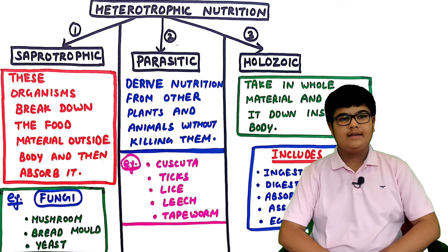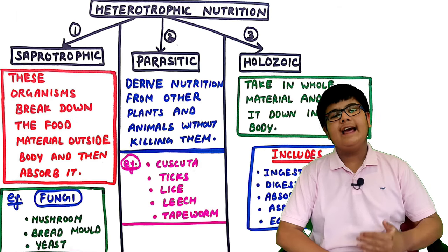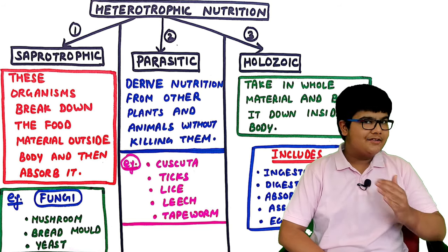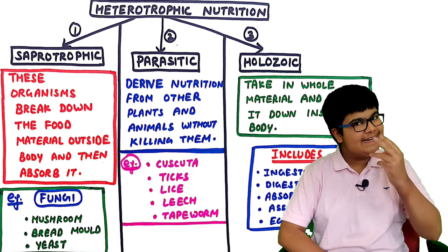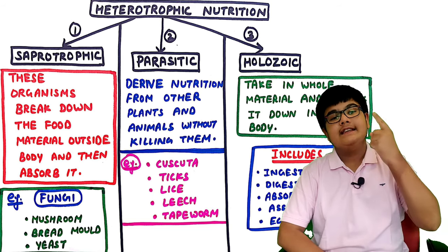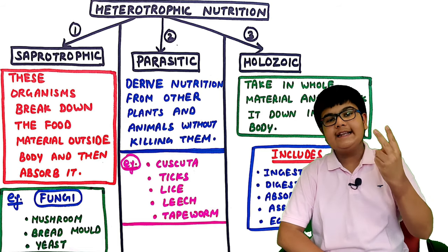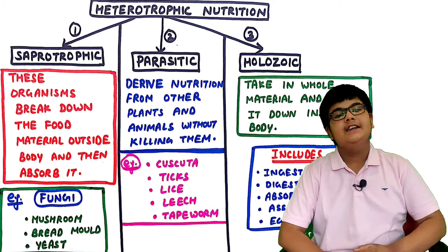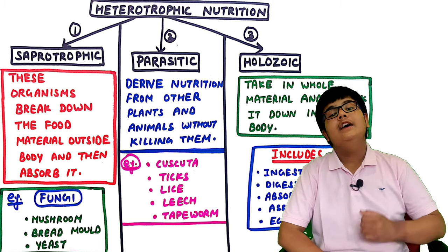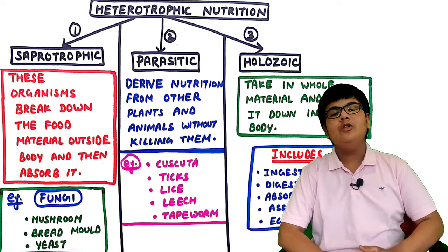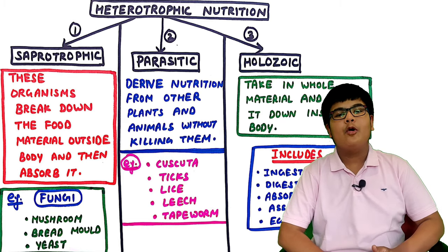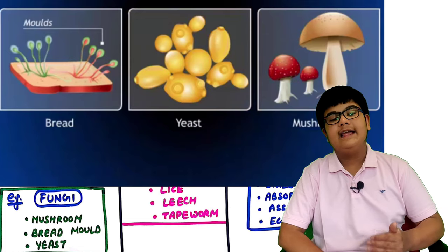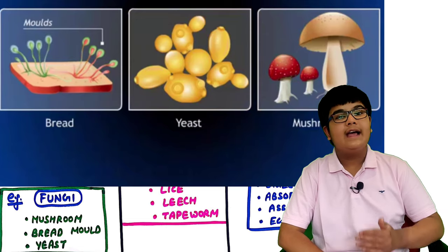Nutrition in animals is also known as heterotrophic nutrition, which is of three types. First is saprotrophic nutrition - these organisms break down the food material outside their body and then absorb it. For example, fungi like mushroom, bread mold, and yeast.